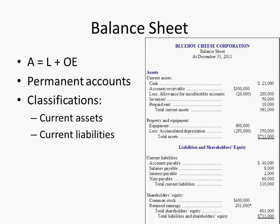The balance sheet reflects the accounting equation: assets equal liabilities plus owner's equity. Those are all the accounts that comprise the balance sheet. Net income from the income statement closes into retained earnings — if you have net income, retained earnings goes up; if you have a net loss, retained earnings goes down.